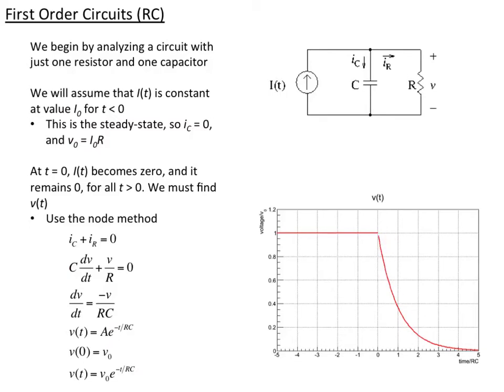When it decays exponentially, after one RC time period the voltage has decayed to about a third. After five RC time periods, only about a percent or so remains.